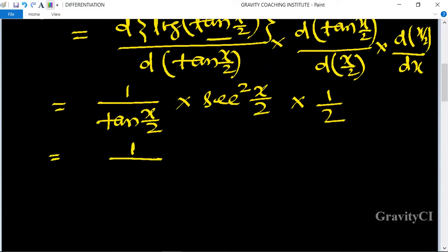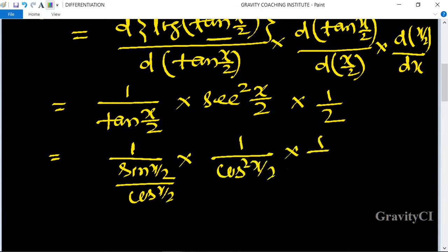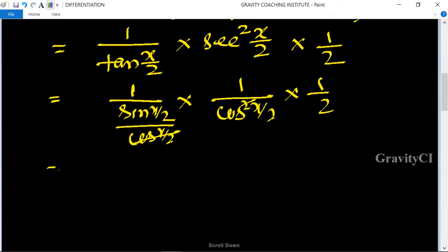This gives [1/(sin(x/2)/cos(x/2))] × [1/cos²(x/2)] × [1/2]. The cos(x/2) terms cancel, so this equals 1/[2sin(x/2)cos(x/2)].